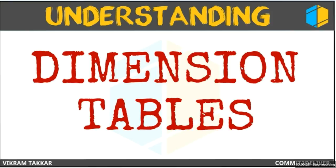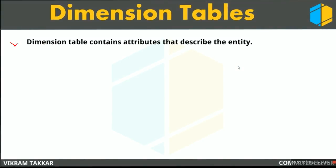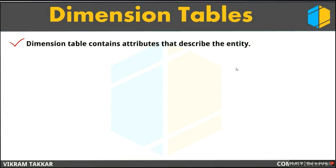Dimension tables, in terms of data warehousing, are those tables which contain attributes that describe the entity. Let's take an example of a customer table. All the information stored in the customer table like customer name, customer address, customer age are those attributes which describe that customer. All those tables which contain the attributes that describe a certain entity are called dimension tables.